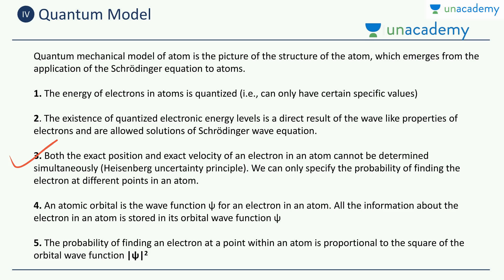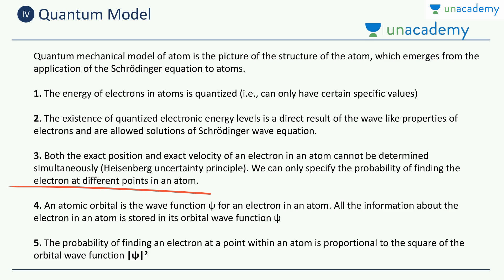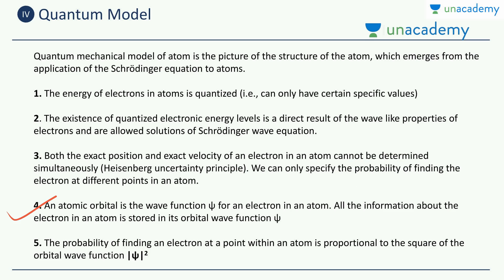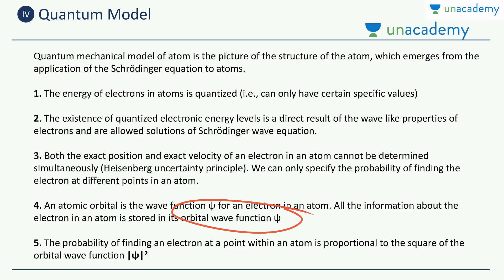Thirdly, both the exact position and the exact velocity of an electron in an atom cannot be determined simultaneously — this is the Heisenberg uncertainty principle. Hence we can only specify the probability of finding the electron at different points in an atom. We cannot say with 100% certainty that you will find an electron in a specific region; we can only assign a probability distribution. Fourth point: an atomic orbital is the wave function ψ of an electron in an atom. All the information about the electron in an atom is stored in its orbital wave function. If you know this orbital wave function ψ of an electron, you will find all the information you will ever require, and this wave function is characterized by three quantum numbers.